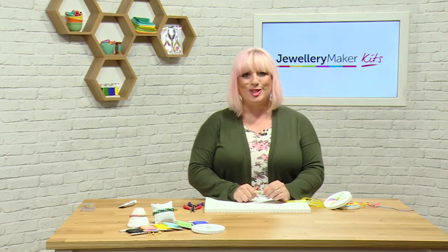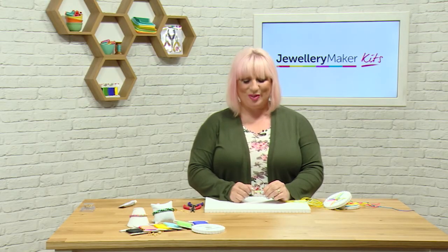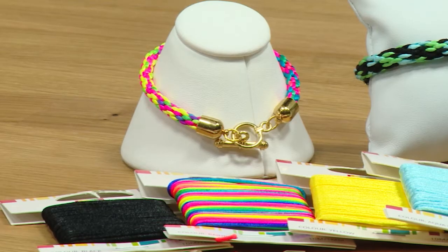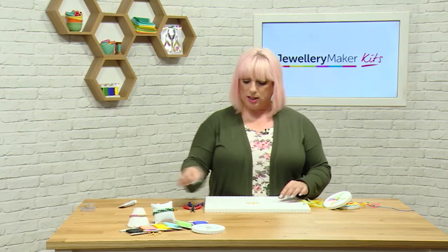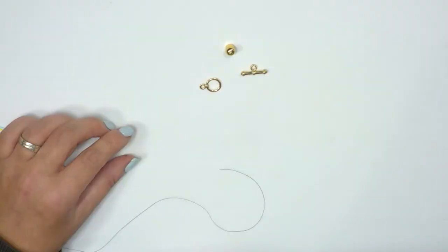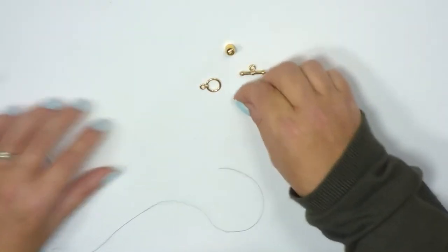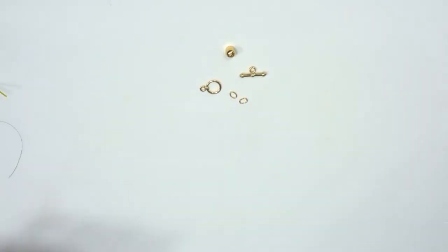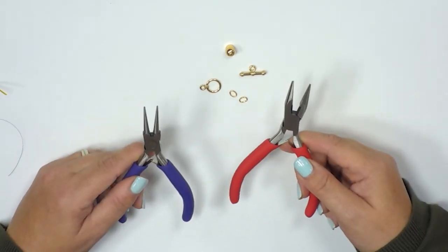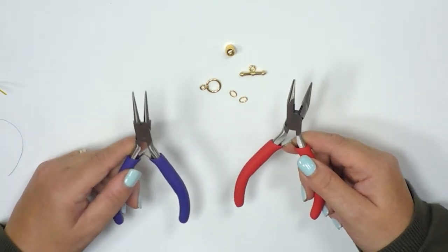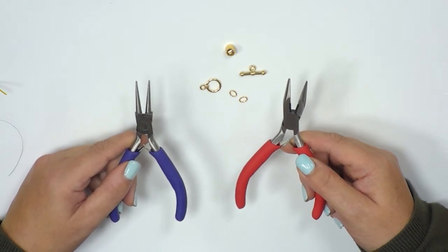So now we need to just add on the toggle clasp and then we're finished. So with the toggle clasp we're going to take our two ends of our toggle clasp and we need two of our jump rings. Now the tools that we're going to use to attach the toggle clasp are our red handled flat nose or chain nose pliers and our blue handled round nose pliers.